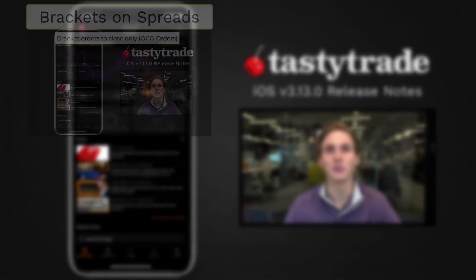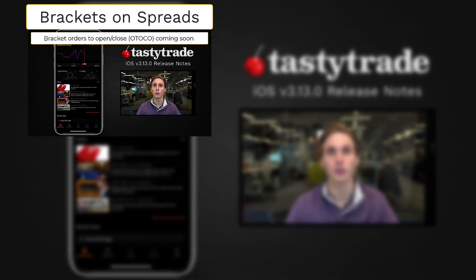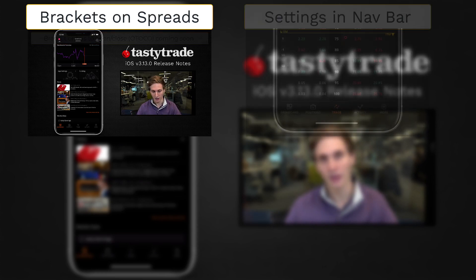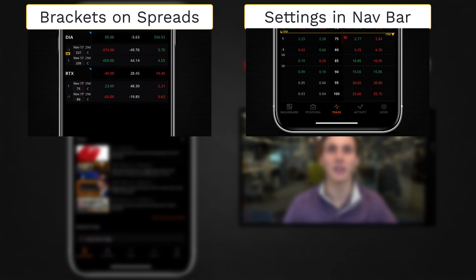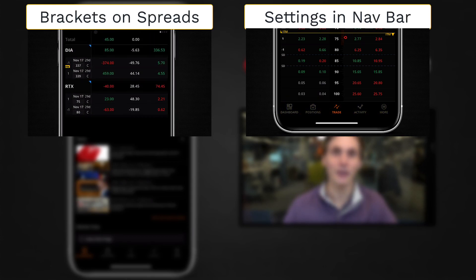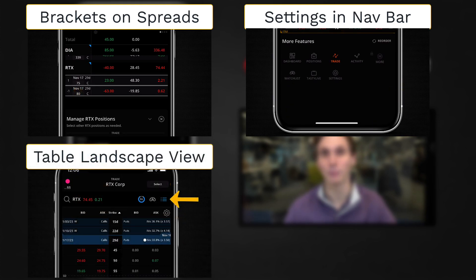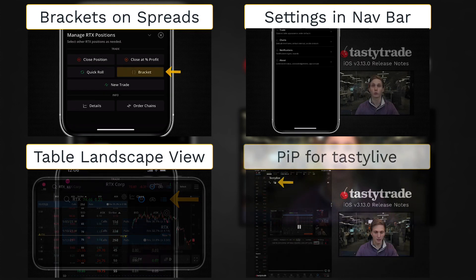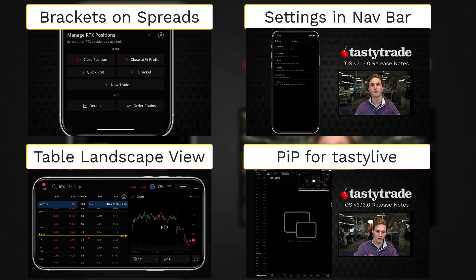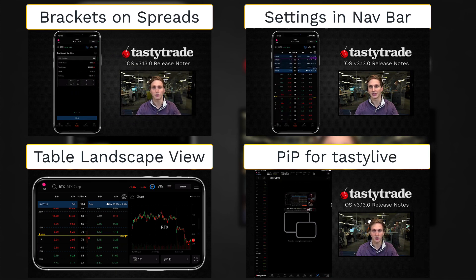To start, we're going to dive into the iPhone updates, where we've introduced bracket orders for open option spreads. Then we'll touch the navigation bar, where we can see a brand new settings button. We'll also dive into the table mode in landscape orientation, where we have a brand new view. And then to wrap things up, we'll hop on our iPad and check out the brand new picture-in-picture feature for the Tasty Live livestream.